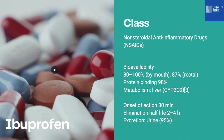Protein binding is 98%, and it is metabolized in the liver with the enzyme CYP2C9. The onset of this medication is usually 30 minutes after oral intake. The elimination half-life is 2 to 4 hours, and it is excreted in the urine at 95%. The major organs involved in this medication are the liver and the kidney, so for patients with renal and liver problems, watch out when taking this medication.